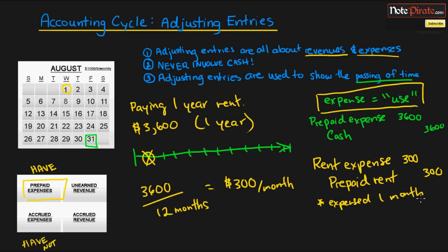That's exactly the point of the adjusting entry. Looking back at the rules, everything is in line: we've created an expense adjusting entry, it does not involve cash, and the adjusting entry is used to show the passage of time — the passage of one month. So we've just created a prepaid expense adjusting entry.